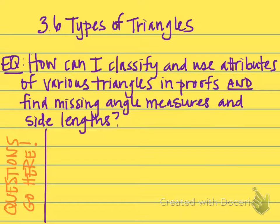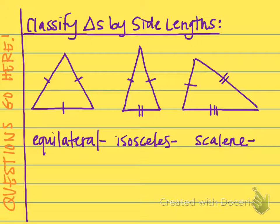The second section is over 3.6 types of triangles. Your central question is: how can I classify and use attributes of various triangles in proofs and find missing angle measures and side lengths? There are two ways to classify triangles — by side lengths or by angle measures. If we're looking at just their side lengths, the three classifications are equilateral, isosceles, and scalene.